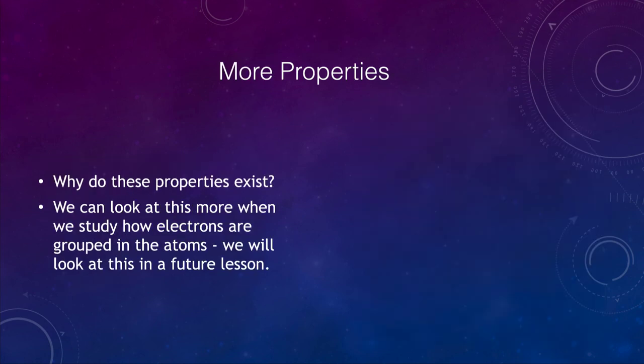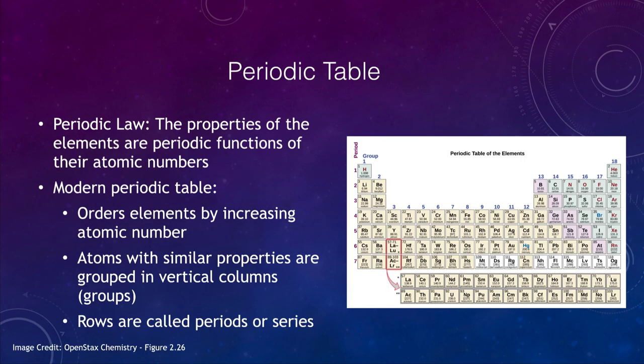Now a few more properties we can look at, like why do these properties exist? We're going to look at this a little bit more. I've mentioned the electrons. When we see how electrons are grouped into the atoms, we will see why these properties occur. So there are reasons that when we look at our periodic table they tell us something about the number of electrons in the outer portion of each shell.